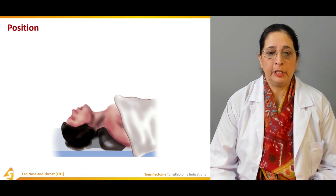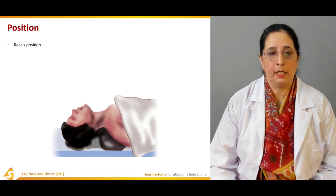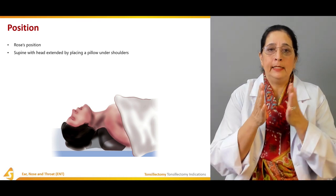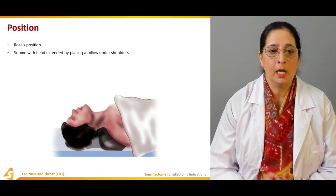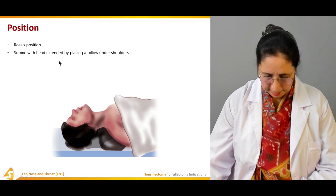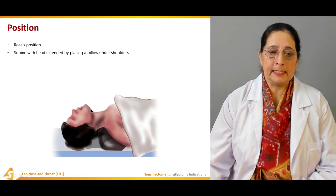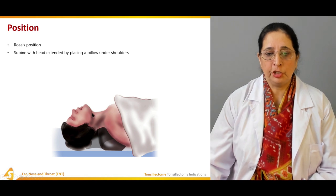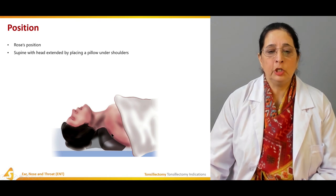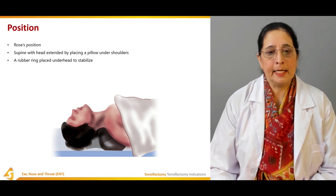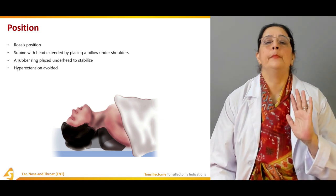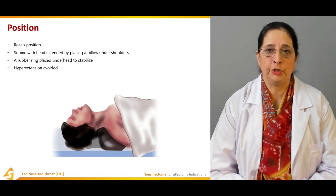The position of the patient is known as Rose's position. The patient is placed supine — lying on the back with face upward — with the head extended by placing a pillow under the shoulder. A rubber ring is placed under the head to stabilize it. Hyperextension should be avoided; just a comfortable extension is required.